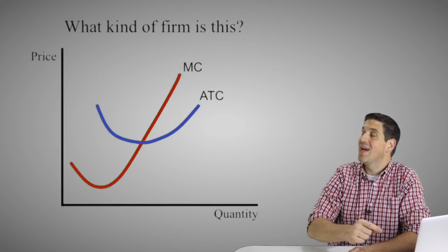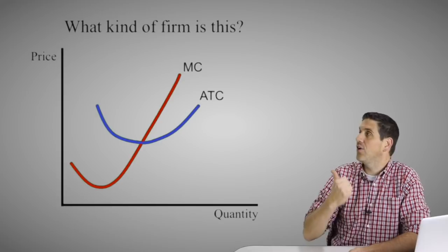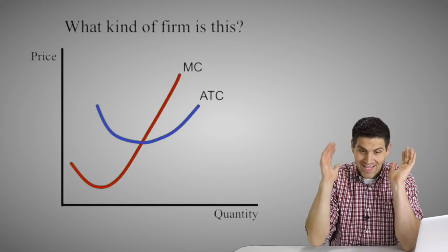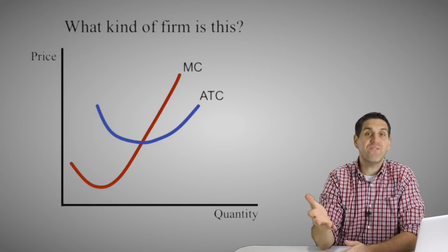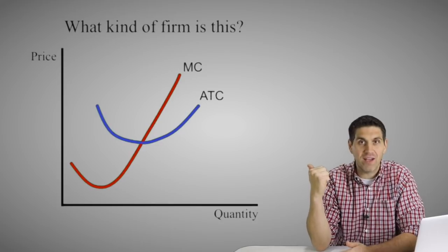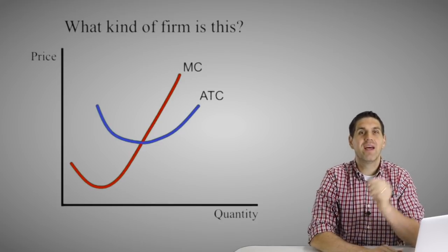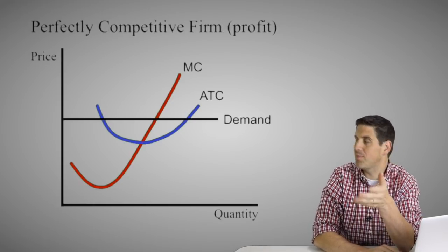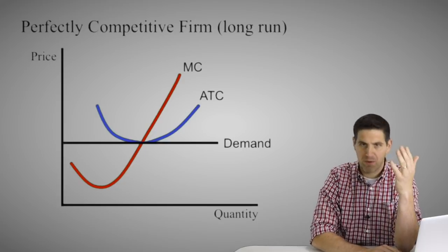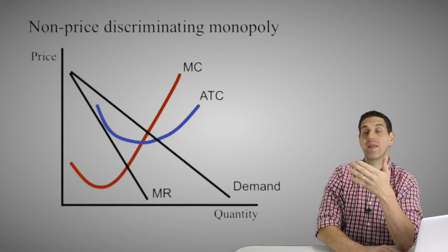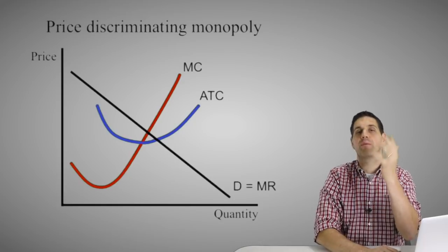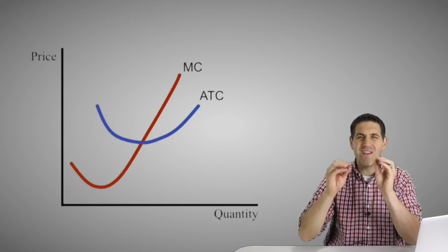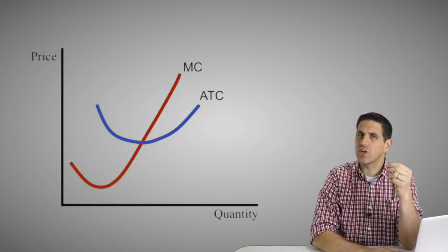Let's start off by talking about the cost curves — take a look at this graph right here. What kind of firm is this? By now you should recognize it is not any particular firm. You can't figure out what type of market something is by looking at the cost curves. That's not how this stuff works. The cost curves are the same for everybody, so this one graph could be all sorts of things — perfect competition making a profit, a loss, perfect competition in the long run, or a monopoly, a non-price-discriminating monopoly, a price-discriminating monopoly, or monopolistic competition in the long run.